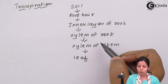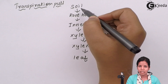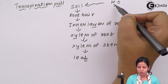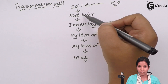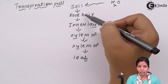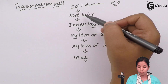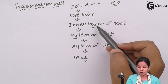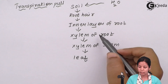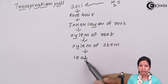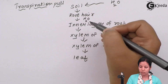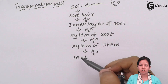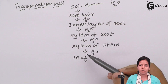This is how transpirational pull works. Water molecules present inside the soil move inside the root hairs of the plant. From the root hairs, which precisely have xylem elements, water will move inside the inner layers of the root, which are the meristematic cells. From the inner layer of the root, water molecules move into the xylem of the root, then into the xylem of the stem, and finally to the leaf and other parts. So basically water molecules move through every part of the plant until they reach the leaf and other parts.